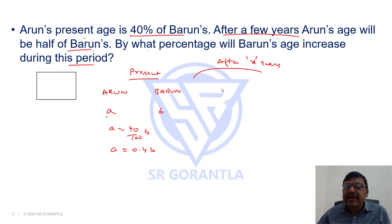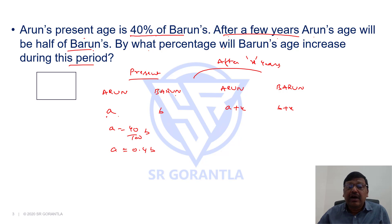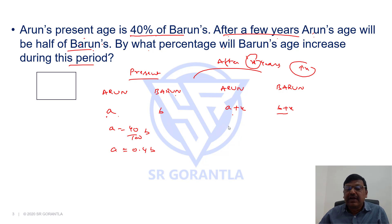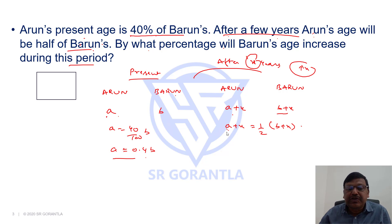If Arun is A today, after X years, Arun's age is going to be A plus X and Barun's age will be B plus X, because after X years each one's age will increase by X. So Arun is A plus X, Barun is B plus X. Now, the relation after a few years: Arun's age will be half of Barun's — A plus X equals half of B plus X. This is the second equation. But A equals 0.4B, so substituting: 0.4B plus X equals half of B plus X.